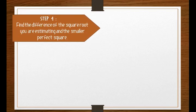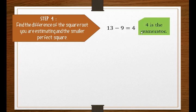Step four: find the difference of the square root you are estimating and the smaller perfect square. The square root we are estimating is 13 and the smaller perfect square is 9. So 13 minus 9 equals 4, and 4 is the numerator.